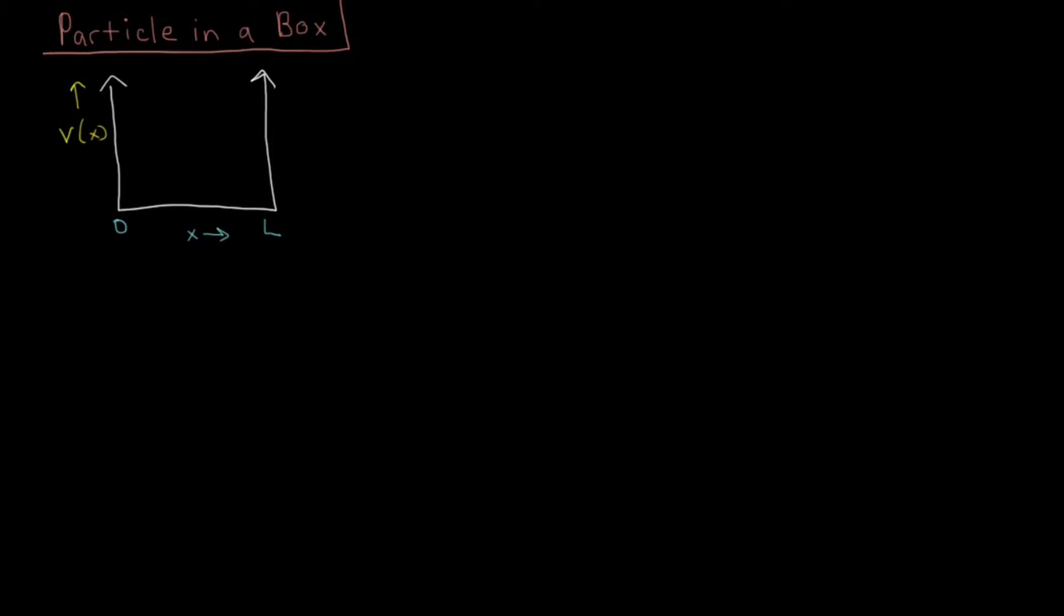V of X, the potential energy acting on the particle that's going to be somewhere inside this well, is going to be one of two possible values. The potential will be 0 if the particle is inside the box somewhere, 0 is less than X is less than L, somewhere inside the box.